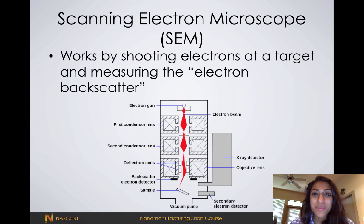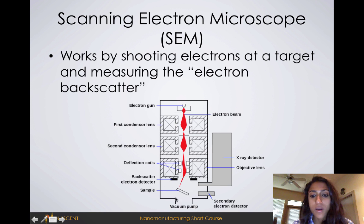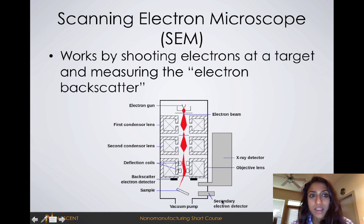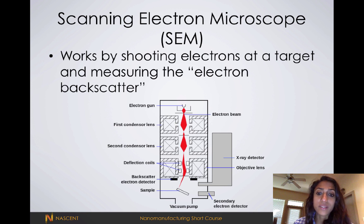The scanning electron microscope, or SEM, works by shooting electrons out of an electron gun and measuring the electron backscatter or secondary electrons. This technique has nanometer scale resolution and is a way of visualizing feature profiles or surfaces of materials.